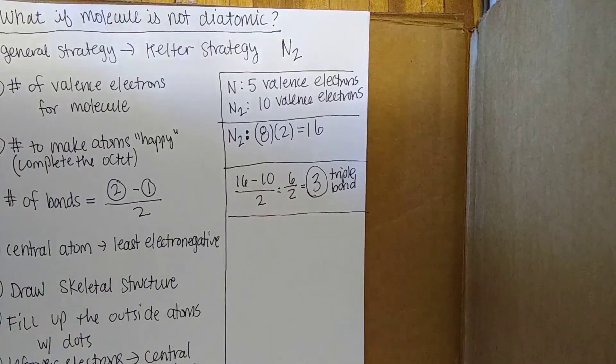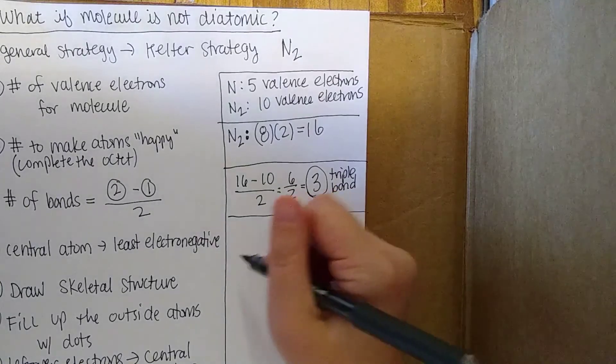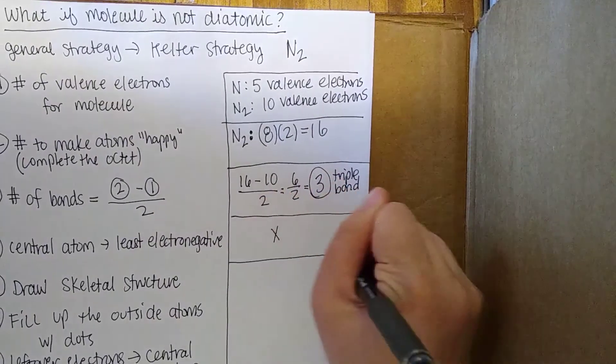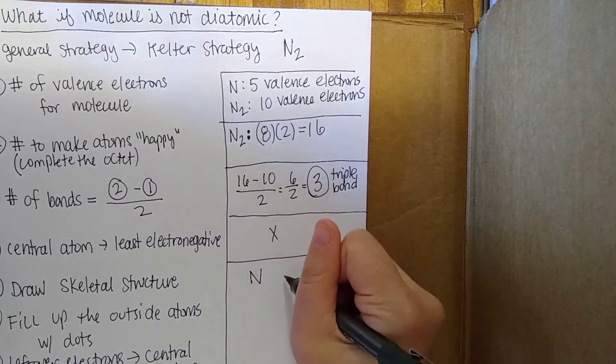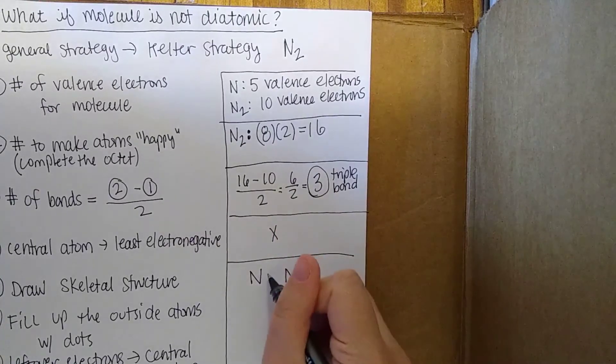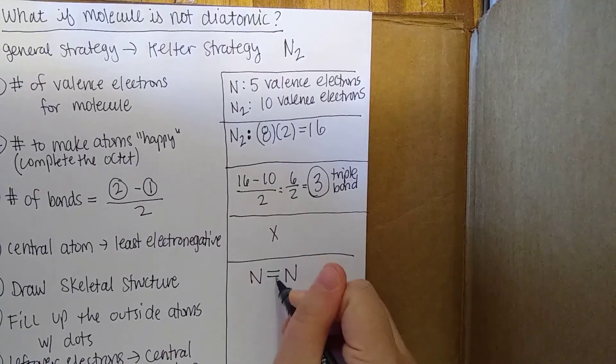Okay, in step 4, because both of the atoms we're dealing with are the same and there's only 2, we know we're dealing with something linear here, so we don't have to worry about this. But I'm going to show other examples where it does matter. But for now, there is no central atom. So let's draw the skeletal structure. We know we have 2 nitrogens and that there's going to be a triple bond between them.